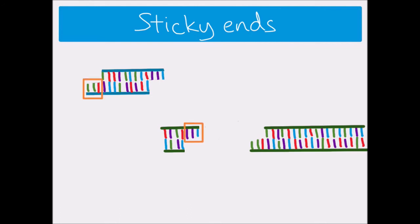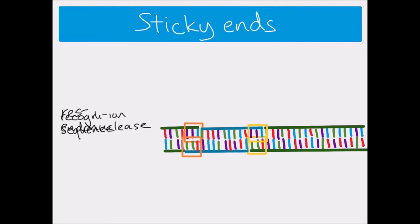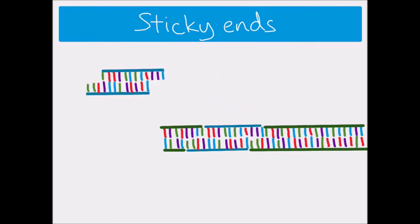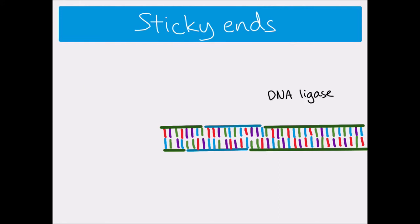The sequences on the ends of the gene and the plasmid are complementary to one another — these are the sticky ends. We can take the gene and insert it into the plasmid DNA so that the complementary base pairs align on both sides. We then use an enzyme called DNA ligase to bond them together and complete the sugar-phosphate backbone. Once that's done we have our recombinant DNA — the plasmid with our new gene from another source inserted into it.